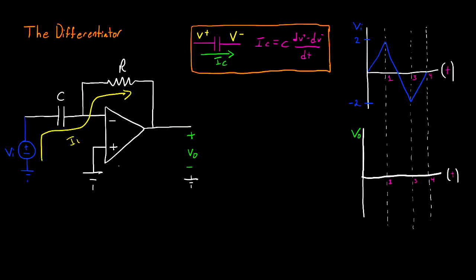And in this case, we only have one current. And because no current goes into my op-amp, this is going to be the same current for both R and C.